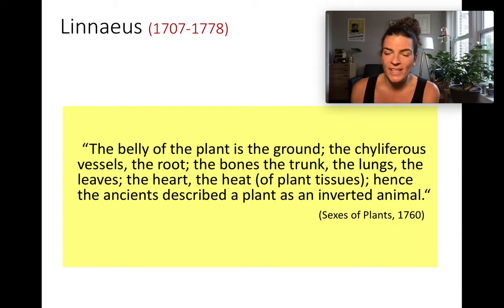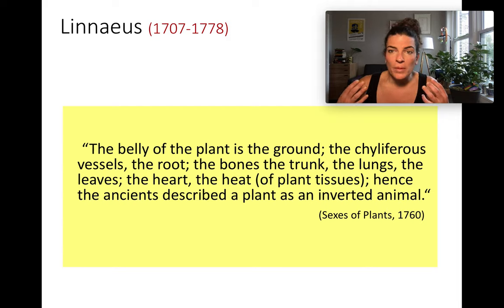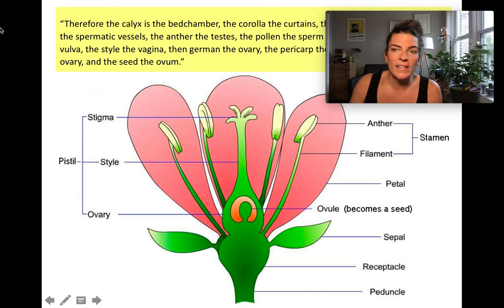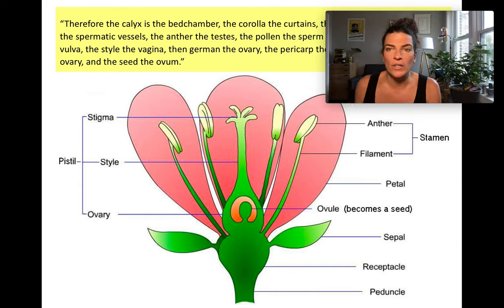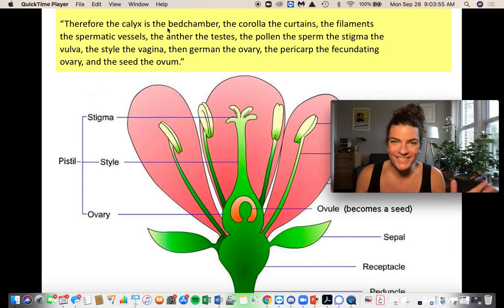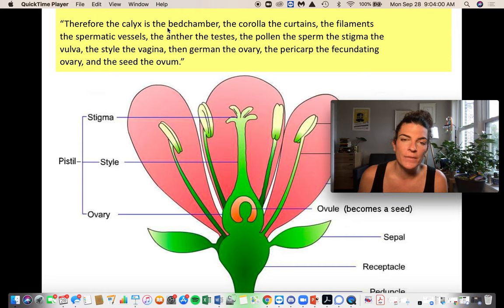He noted in his book published in 1760 called Sexes of the Plants that plants and the components of plants are very similar to the components of animals. If we look at a flower, we can think of parts of the flower as similar reproductive parts of the human species. The calyx is the bedchamber, the corolla the curtains, the filaments the spermatic vessels, the anther the testes or testicles, the pollen of course the sperm.